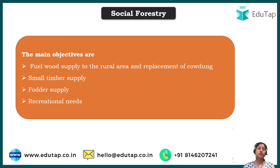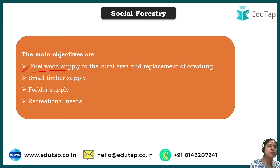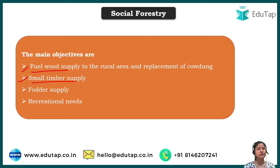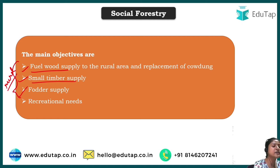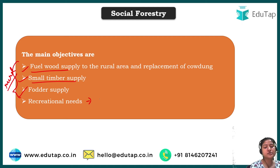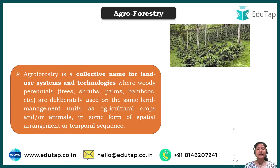The objectives of social forestry differ by area. In rural areas, it could be for fuel wood supply, small timber supply — timber being wood used for furniture or commercial purposes — or for fodder. In urban areas, people are not dependent on fuel or timber in the same way, so forests there are used more for recreational purposes.